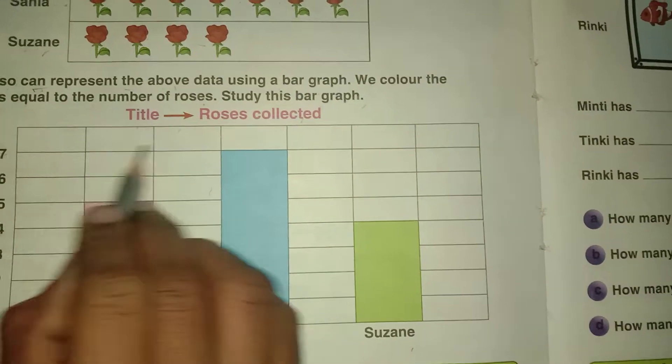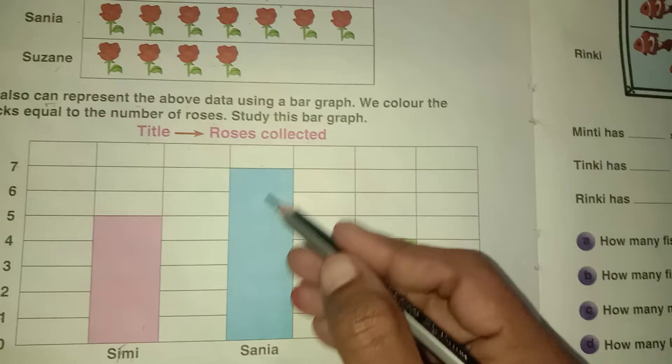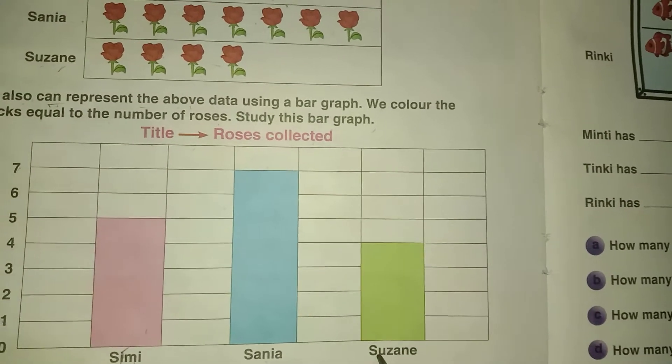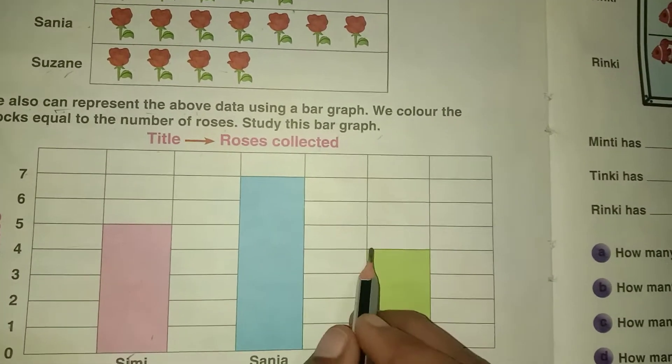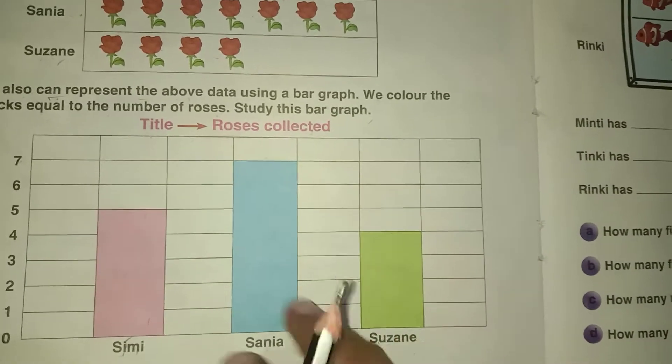And Sanya collected up to 7 blocks are colored here. And Suzanne collected 4 roses means 4 blocks are colored here. This is the bar graph.